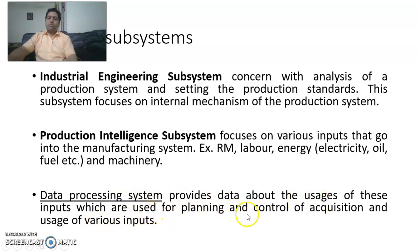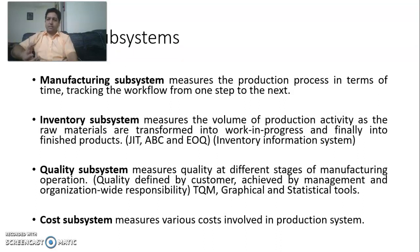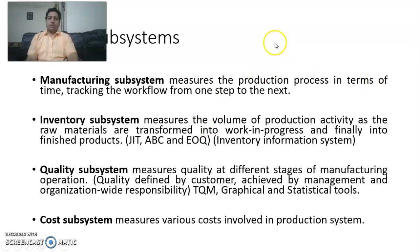Both input subsystems lead to data processing. Within the data processing system, it provides data about the uses of these inputs, which are used for planning and control of acquisition and use of various inputs. Regarding the output subsystem, there are four output subsystems. The manufacturing subsystem measures the production process in terms of time, tracking workflow from one step to the next — covering scheduling and all stages of material movement.